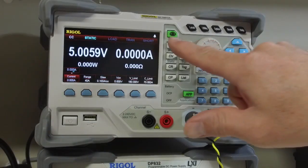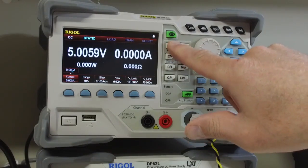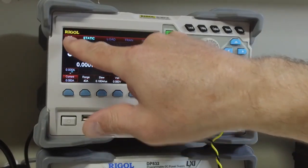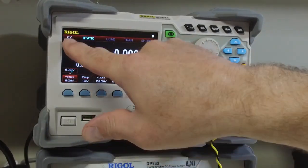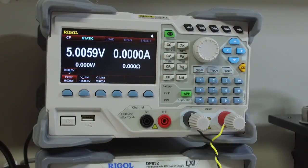The electronic load has the standard functions of constant current (that's CC), constant voltage, constant resistance, and constant power.